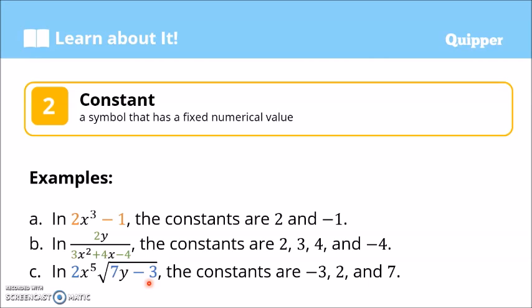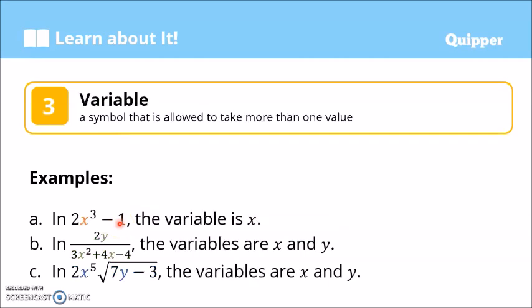Constants are mostly numbers whose values do not change. For example, the 2 in an expression is always 2 — it cannot be changed. Similarly, negative 1 is always negative 1; it never changes.